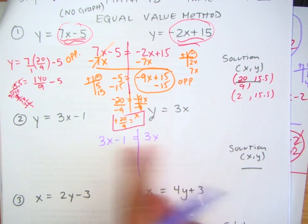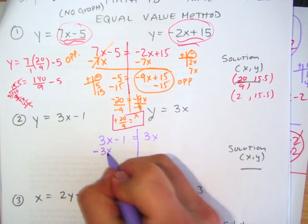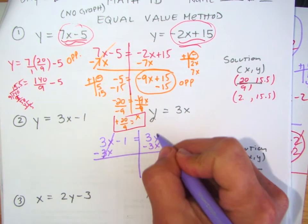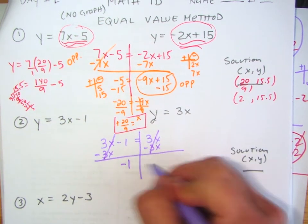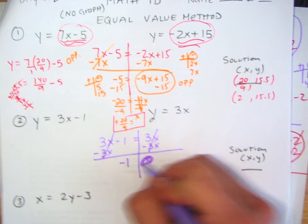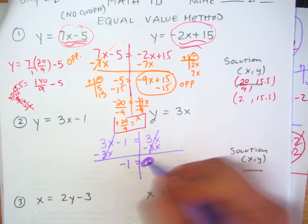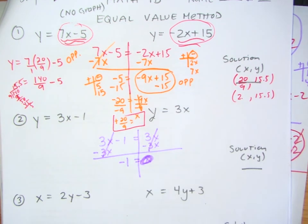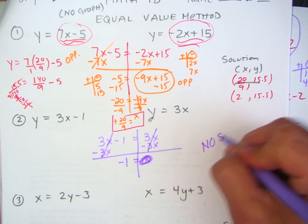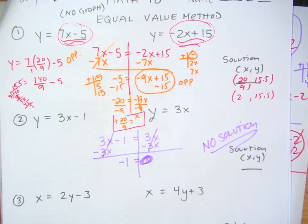I want to get rid of the x's. So let's do minus 3x on both sides. That gives me zero. Wait — so does negative 1 equal 0? No. So my answer is no solution. These two lines will not intersect.